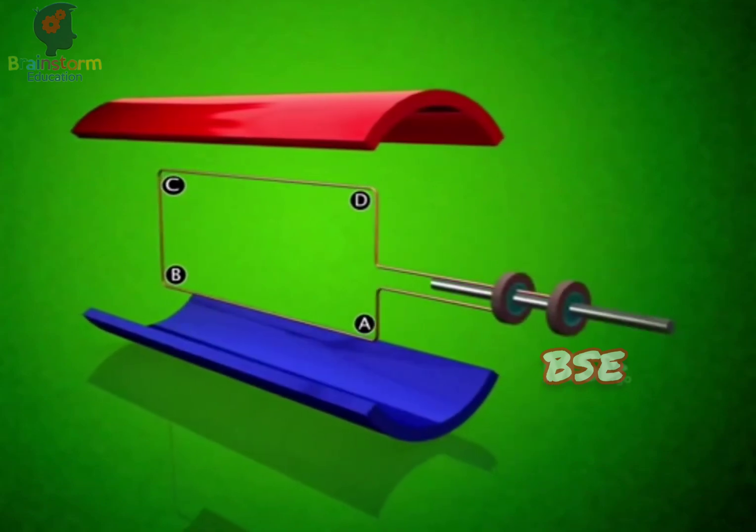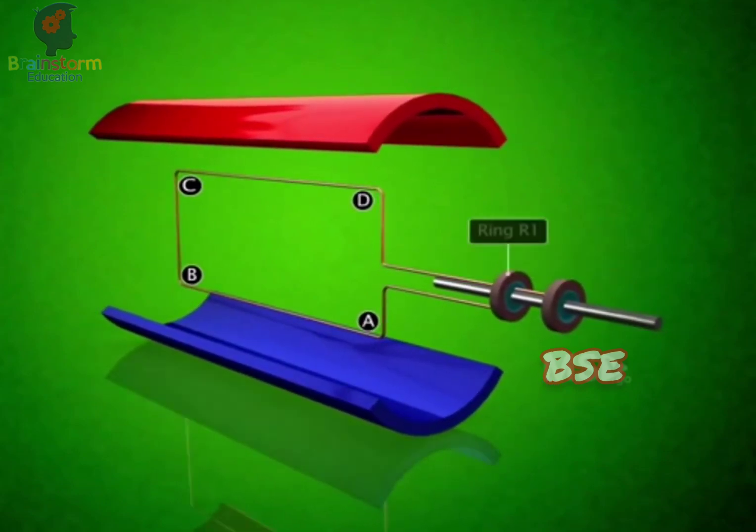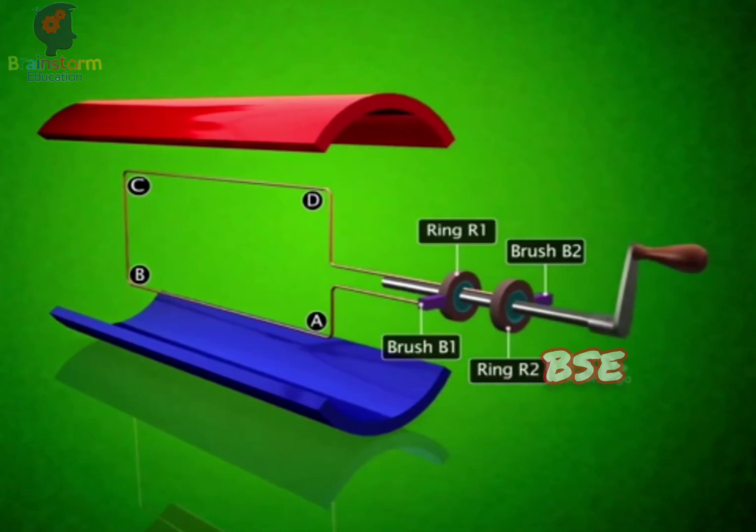The two ends of the coil are connected to the rings R1 and R2. R1 and R2 are insulated on the inner side. The brushes B1 and B2 are positioned such that they press on the rings R1 and R2. The axle can be manually rotated from the outside to rotate the coil inside the magnetic field.